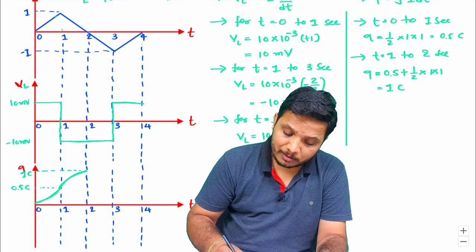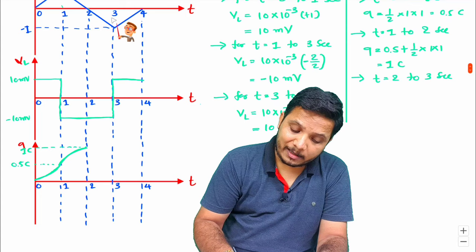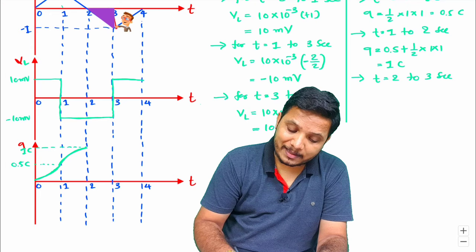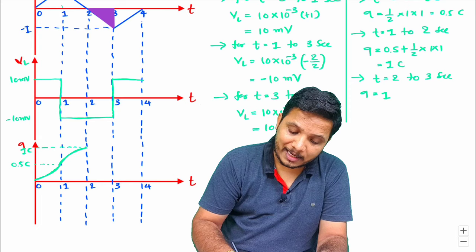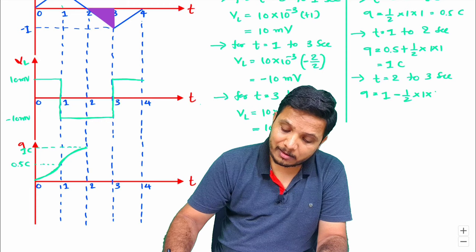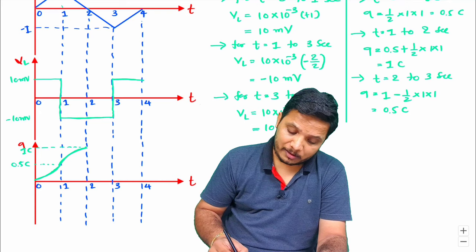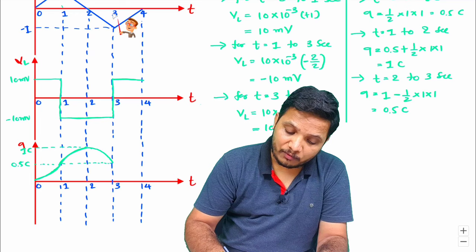For 2 to 3 seconds, the intercepted area is below the time axis, so the charge contribution is negative. Resultant charge = previous charge of 1 C minus ½ × 1 × 1 = 0.5 C. So from 2 to 3 seconds, the charge decreases and reaches 0.5 Coulombs.